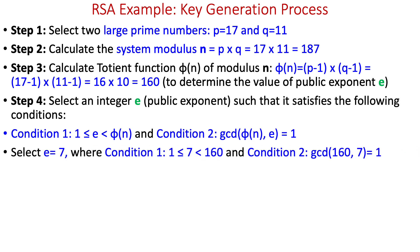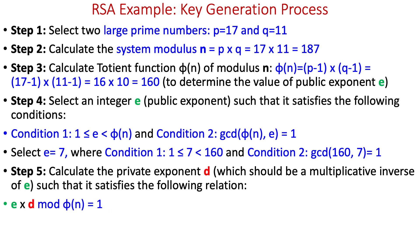We have selected e = 7, which is greater than 1 and smaller than 160, and co-prime to 160, meaning their GCD is 1, which we will calculate just after completing these steps.